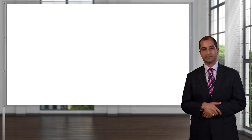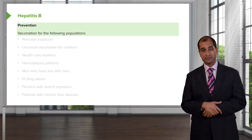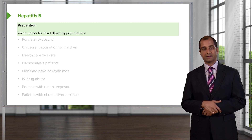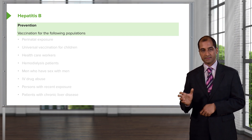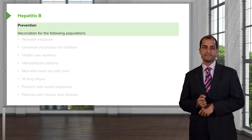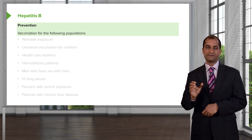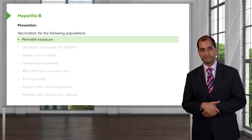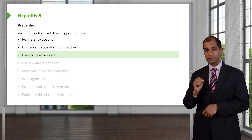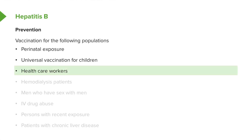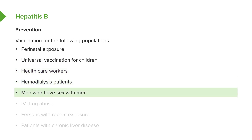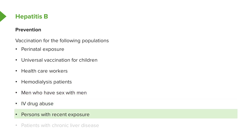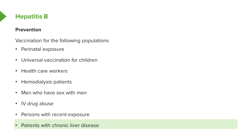Focus should also be on prevention. The vaccination regimen is something to be very familiar with. For perinatal exposure: universal vaccination for all children. High-risk groups that require vaccination include healthcare workers, hemodialysis patients, IV drug abusers, persons with recent exposure, and patients with chronic liver disease. This is your population where you need to prevent hepatitis B from developing.